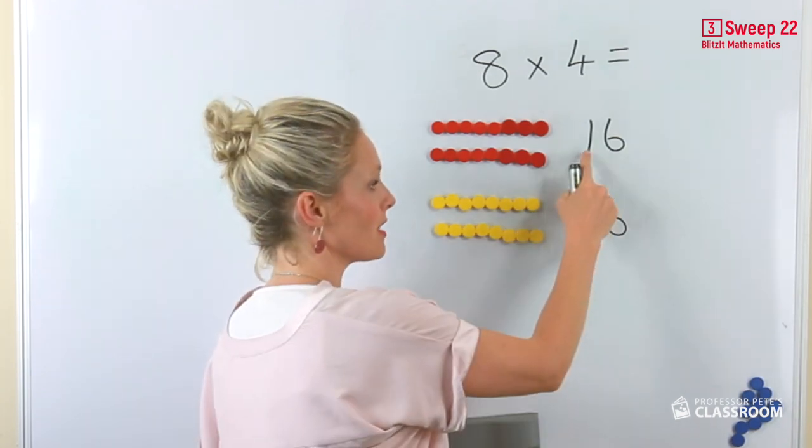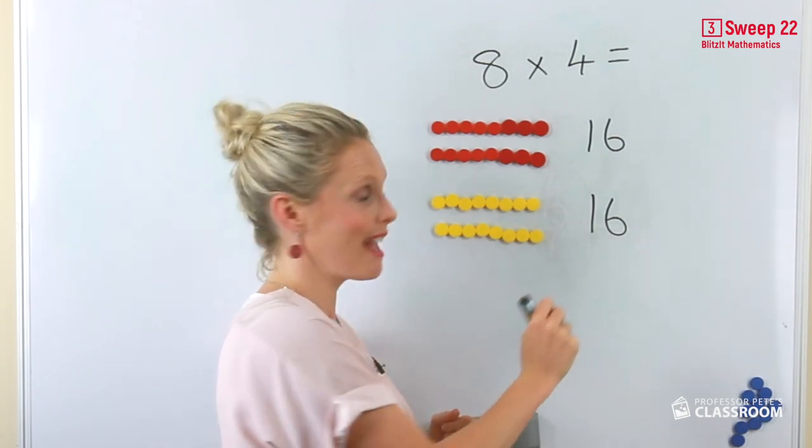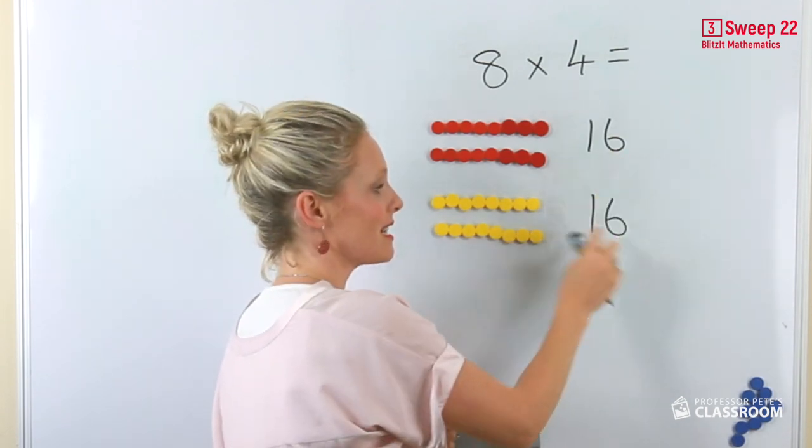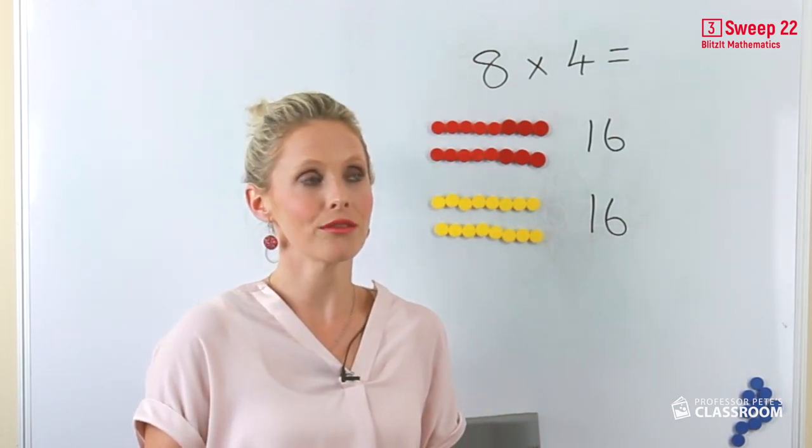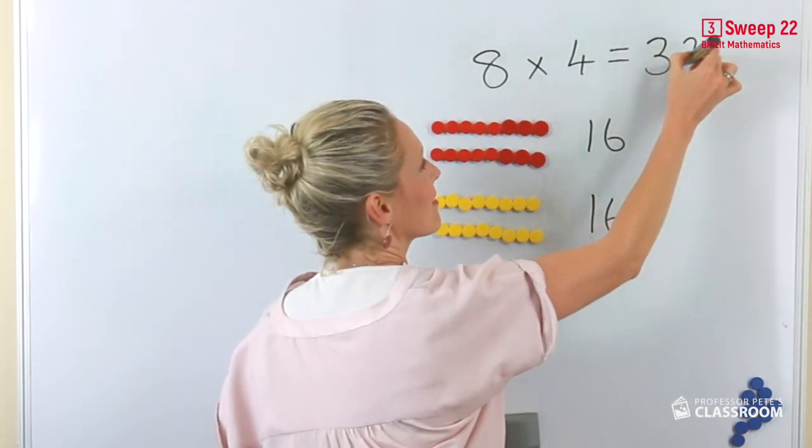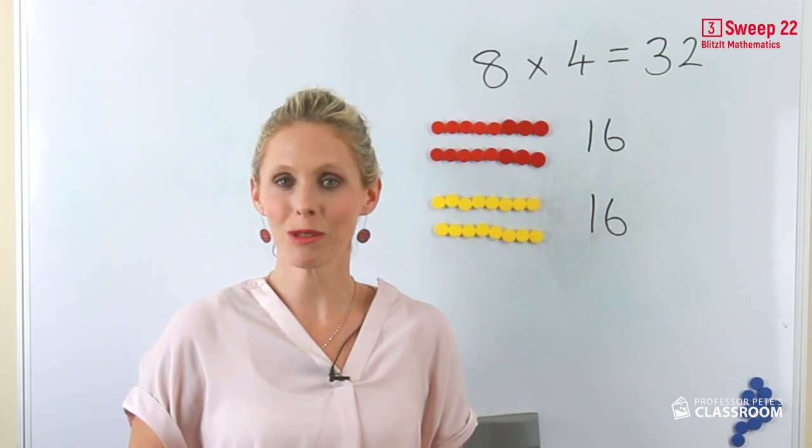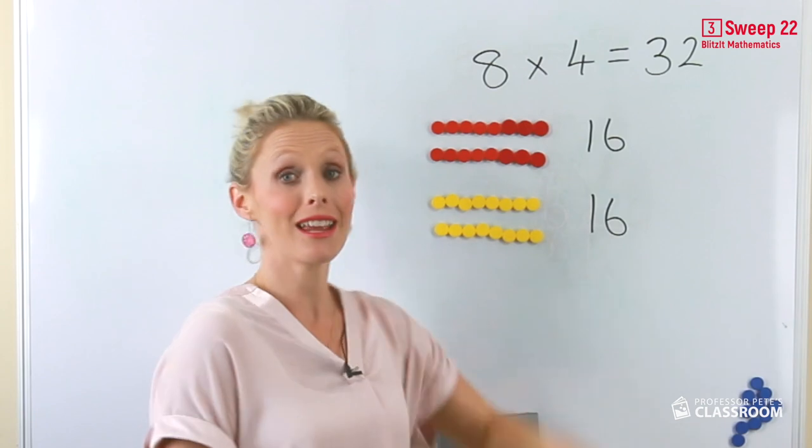We know that two tens equals 20 and six and six equals 12. So what's 20 and 12? 32. So eight times four or four times eight equals 32.